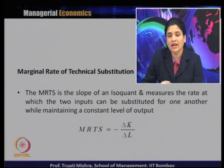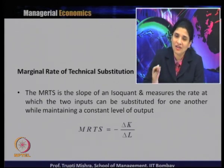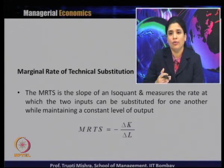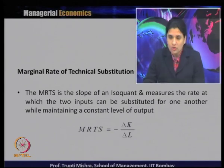Why is MRTS negative? Because whenever we have to increase the amount of one input, we have to reduce the amount of the other input. If you look at the graph, the marginal rate of technical substitution is found from the slope of the isoquant.